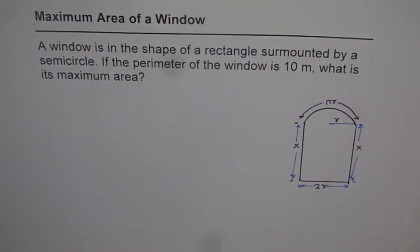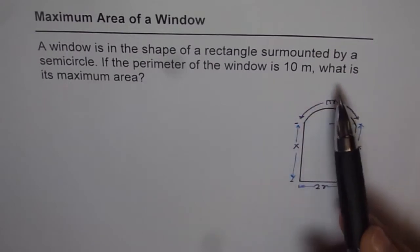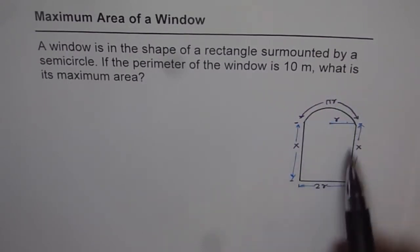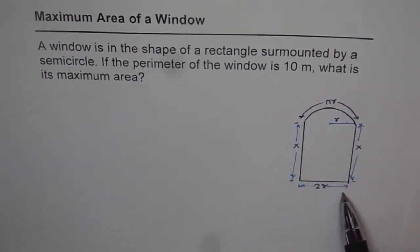Maximum area of a window. A window is in the shape of a rectangle, surmounted by a semicircle as shown in the figure. If the perimeter of the window is 10 meters, what is its maximum area?